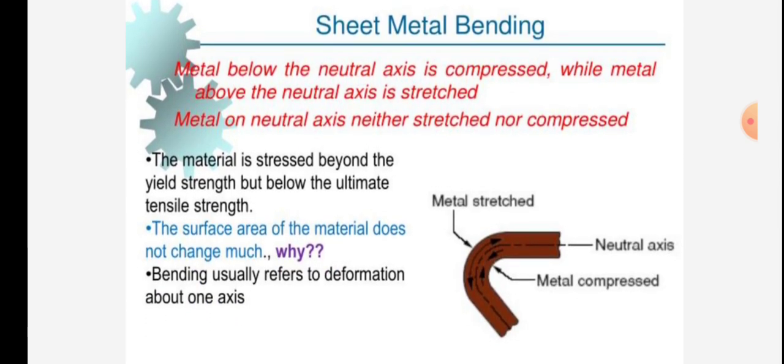Metal below the neutral axis is compressed while metal above the neutral axis is stretched. Metal on the neutral axis is neither stretched nor compressed.